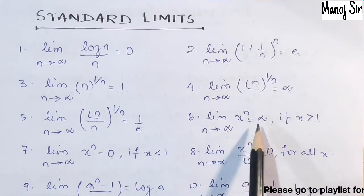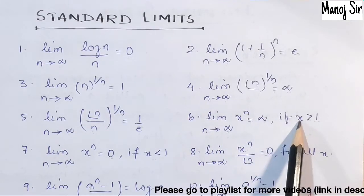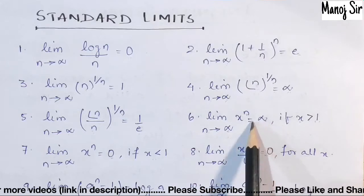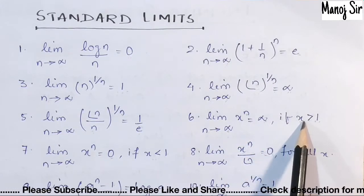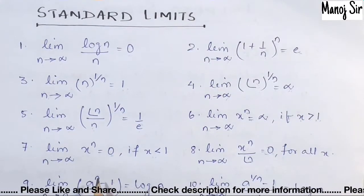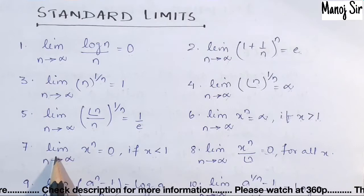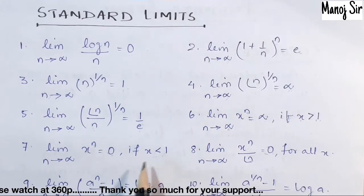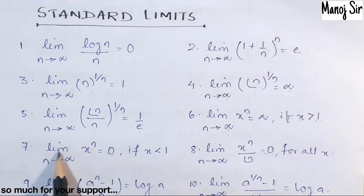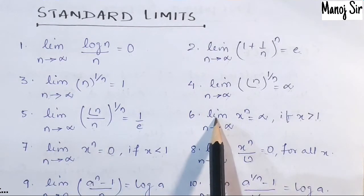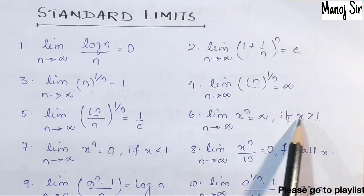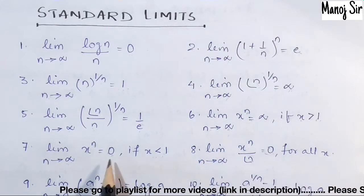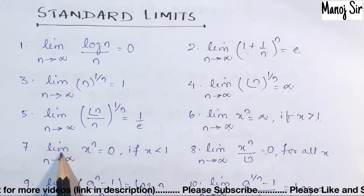Sixth standard limit: limit n tends to infinity of x^n is always infinity if x is greater than 1. Seventh standard limit: limit n tends to infinity of x^n is always 0 if x is less than 1. So if x > 1 the limit is infinity, and if x < 1 the limit is 0.